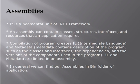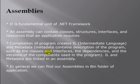Assemblies are the fundamental unit of deployment on the .NET platform. The .NET framework itself is made of a number of assemblies including mscorlib.dll and many more. An assembly contains intermediate language generated by a specific language compiler, and can contain classes, structures, interfaces, and resources an application requires at runtime. Compilation creates IL and metadata — metadata contains descriptions of classes, interfaces, dependencies, and component versions. IL and metadata are linked together into an assembly, found in the project's bin folder.